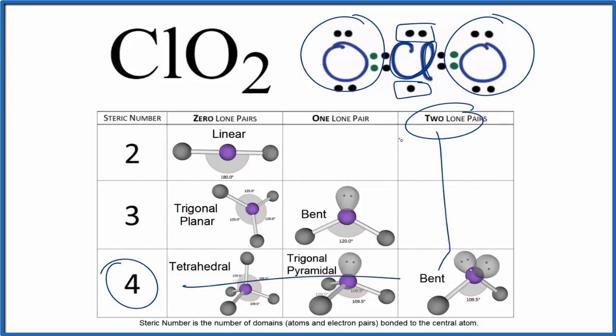Let's try to visualize this in three dimensions. The purple is the central chlorine atom. We'll add the two oxygen atoms. There's one, two, they spread out.